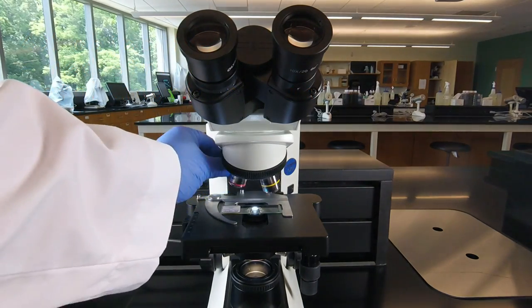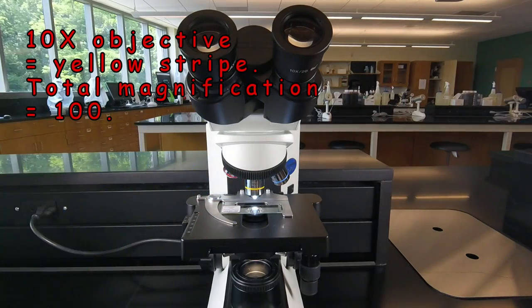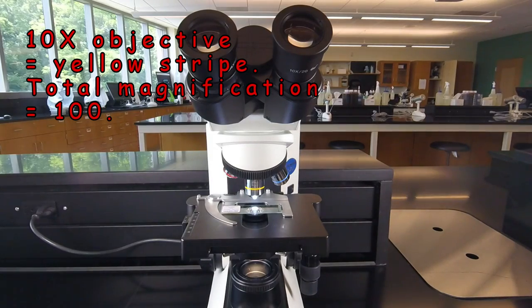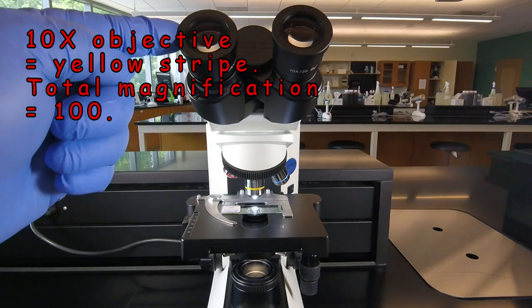Now we will occasionally use the 10x objective, and that's one that has a yellow stripe around that. We click that into place. So now the total magnification is 10 of the objective lens times 10 of the eyepiece.